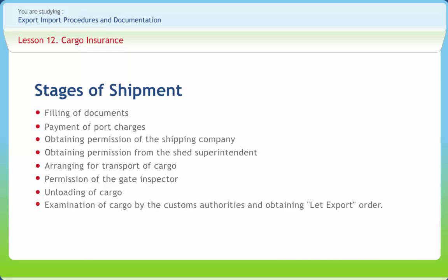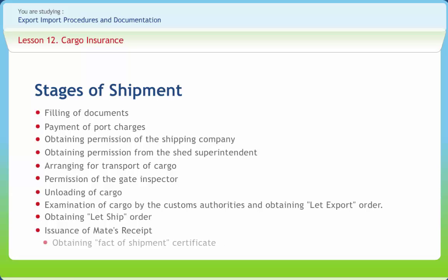Further stages include examination of cargo by customs authorities and obtaining the Let Export Order; obtaining the Let Ship Order from the customs preventive officer prior to loading; issuance of the Mate's Receipt by the master of the vessel; and obtaining the Fact of Shipment Certificate from the customs preventive office.